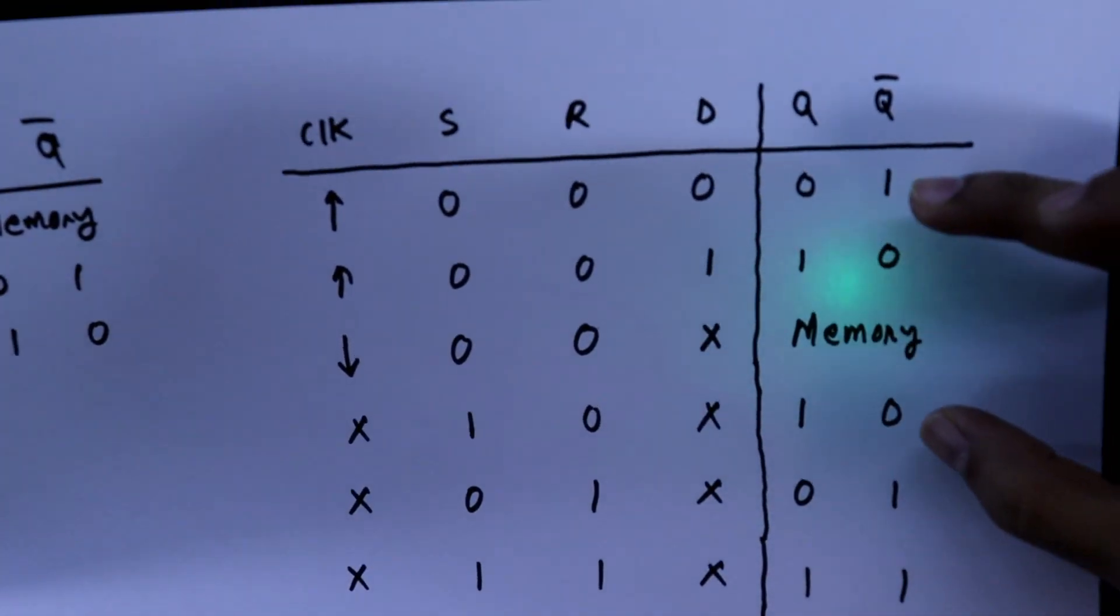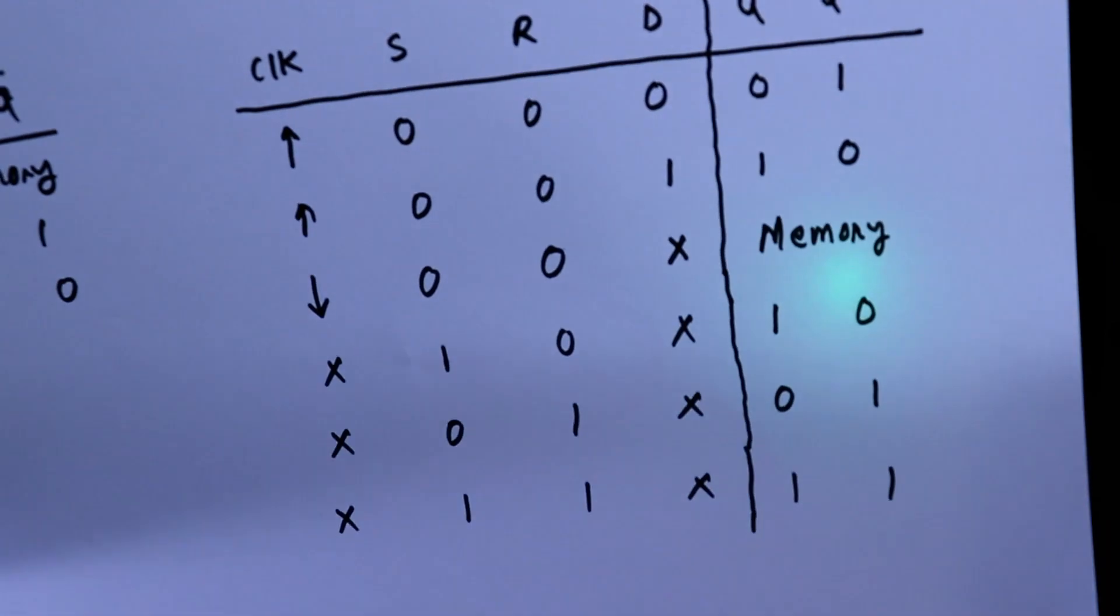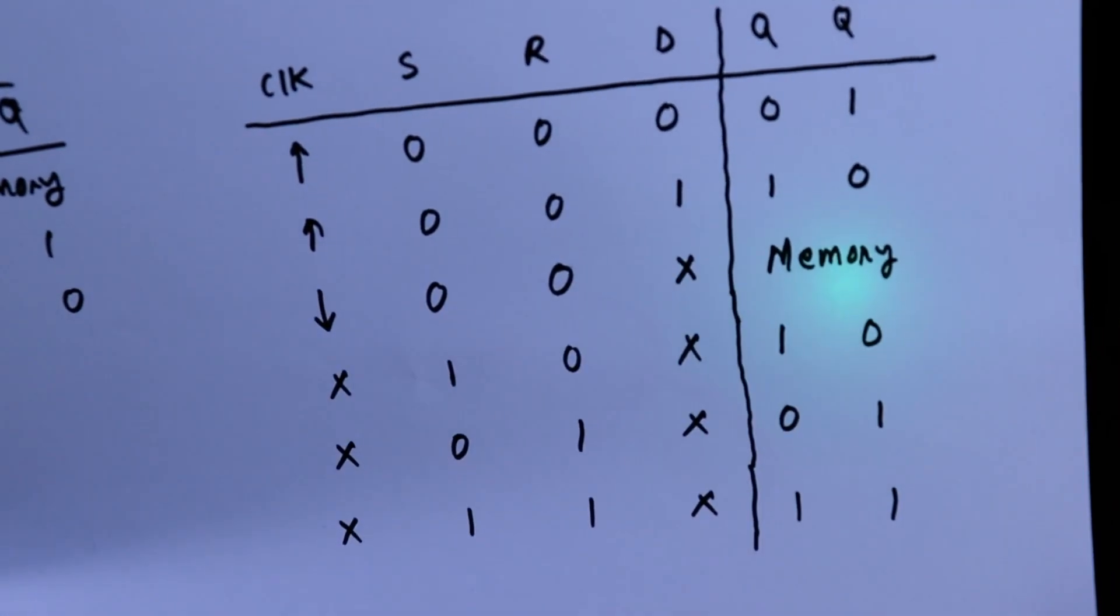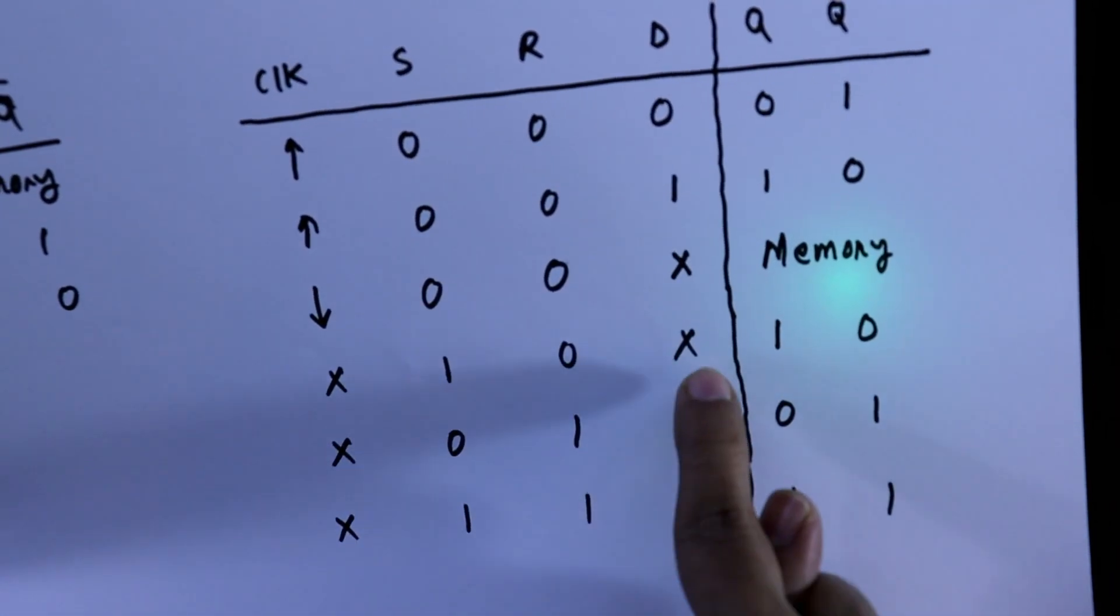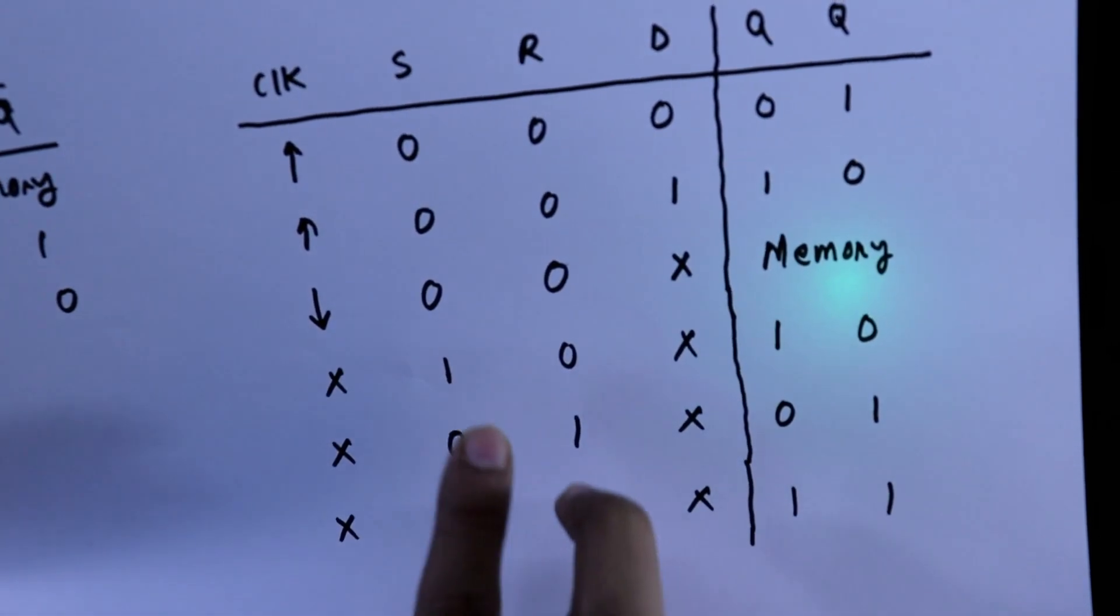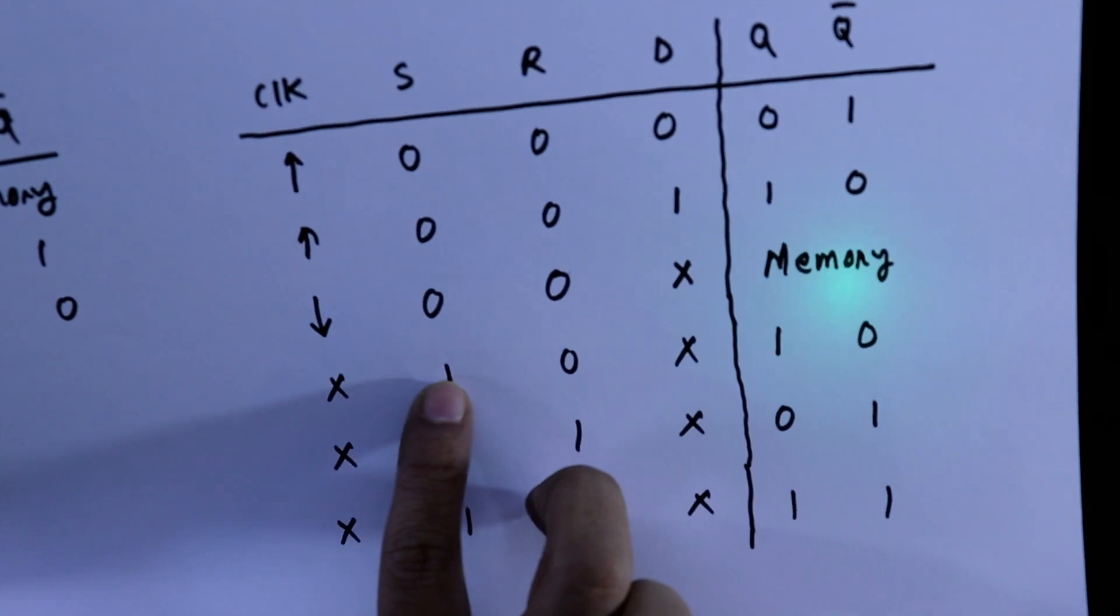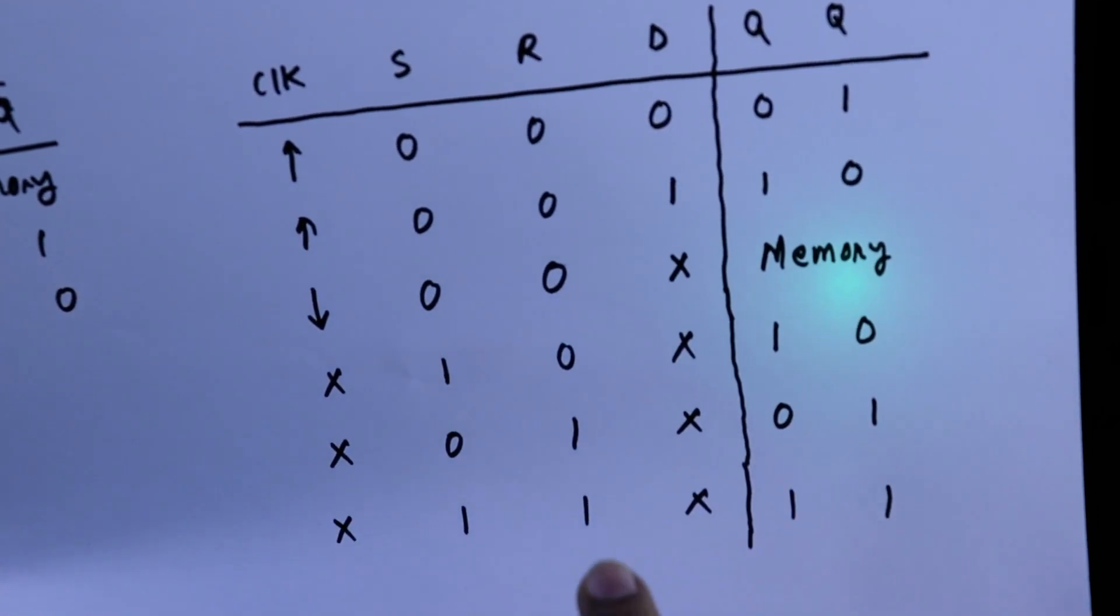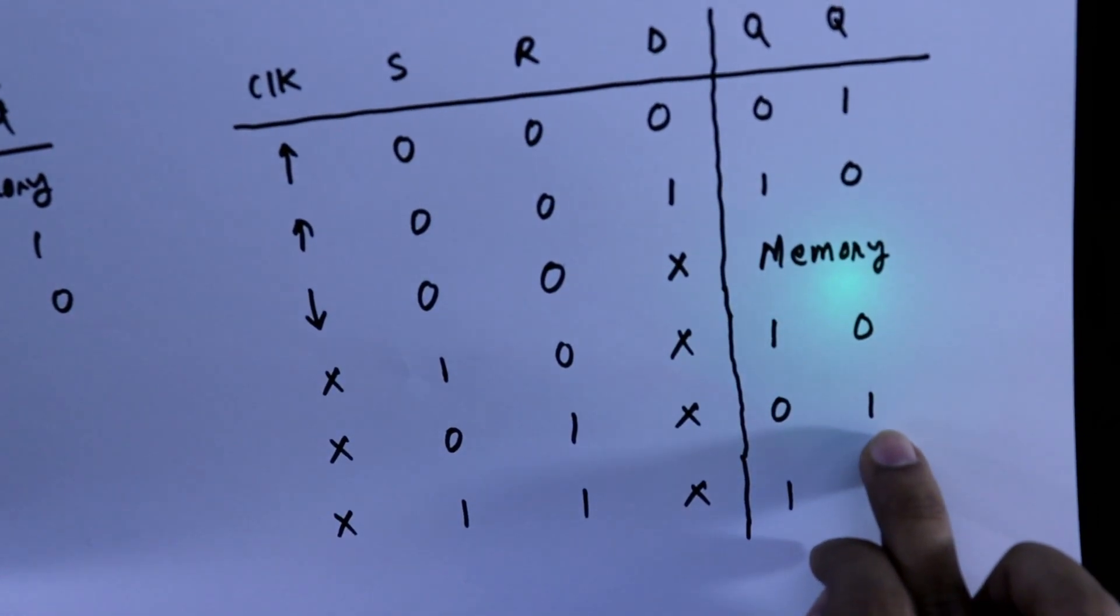So this is how these 3 conditions are working. Now for these 3, it doesn't matter whether clock and D is 0 or 1. It only controls by set and reset. If set is 1, Q will be 1. And reset is 1, Q bar will be 1.